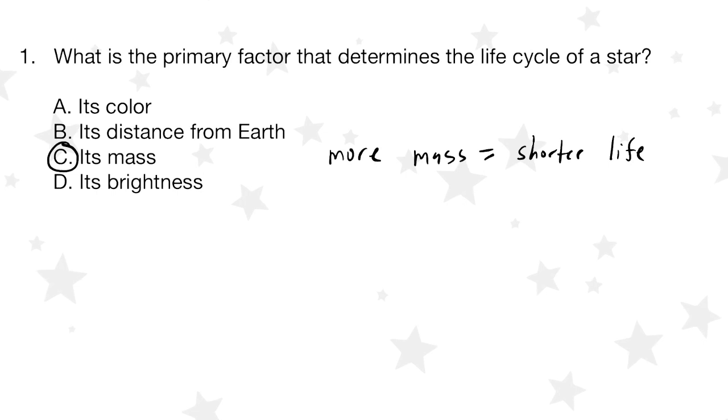The fuel for that nuclear reaction is the amount of mass that the star has. If we can eliminate option A, its color, that's basically just going to tell us the temperature of the star. B, the distance from the earth, that has nothing to do with the life cycle of a star. And then D, its brightness, that is also from the perspective of how far away the star is from the earth. So B and D are kind of correlated. And so once again, option C here is our best answer.